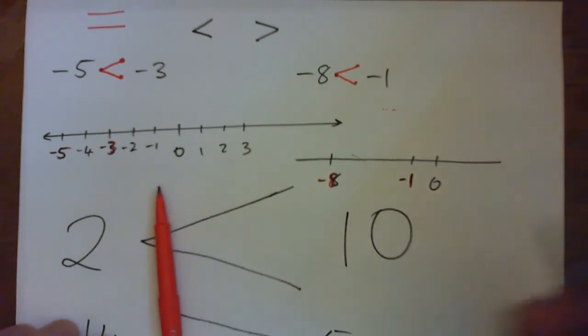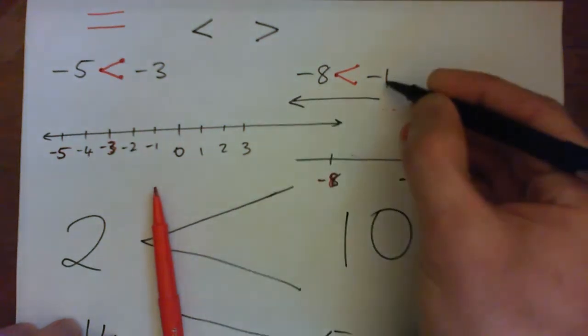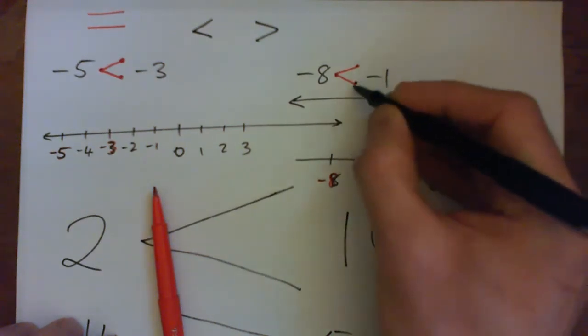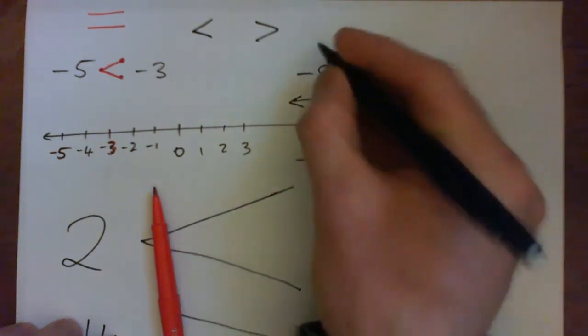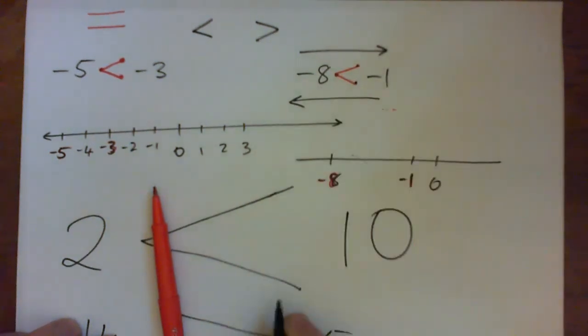And you can actually read these from right to left also. It says negative one is greater than negative eight. Look at that, negative one is actually greater than negative eight. And if you read it in this direction it says negative eight is less than negative one.